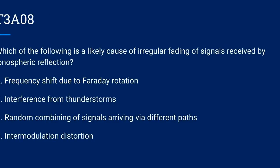T3A08. Which of the following is a likely cause of irregular fading of signals received by ionospheric reflection? A. Frequency shift due to Faraday rotation. B. Interference from thunderstorms. C. Random combining of signals arriving via different paths.